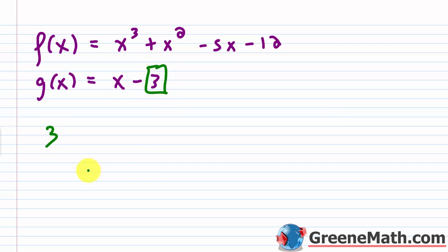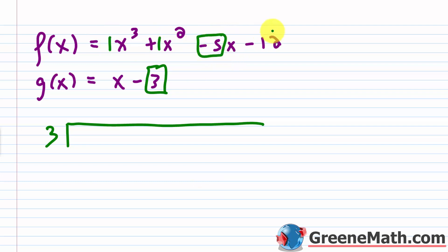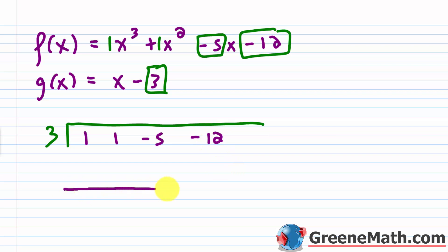I grab whatever this value is — which is 3 — and put it in the top left. Then I grab just the coefficients from the dividend: 1, 1, negative 5, and negative 12. You've got to make sure these are in order in terms of degree — x cubed, x squared, x to the first power. If you're missing a power of x, you put a zero as a placeholder. So we have: 1, 1, negative 5, and negative 12.